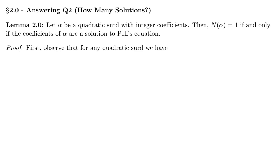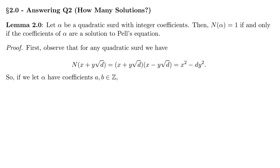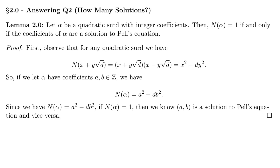Here's the proof. Observe that for any quadratic surd, the norm of x plus y square root of d equals x plus y square root of d times its conjugate x minus y square root of d, which boils down to x squared minus dy squared. So if we let alpha have integer coefficients a and b, then the norm of alpha equals a squared minus db squared. Since the norm of alpha and a squared minus db squared are equal, if the norm of alpha is 1, then a, b is a solution to Pell's equation, and vice versa, because a solution satisfies a squared minus db squared equals 1.